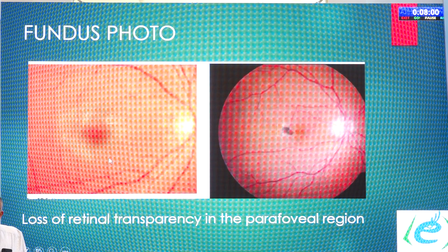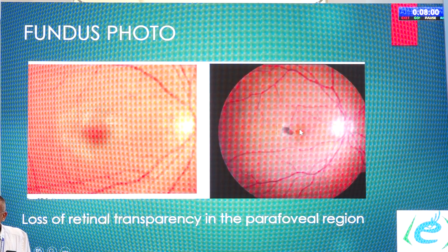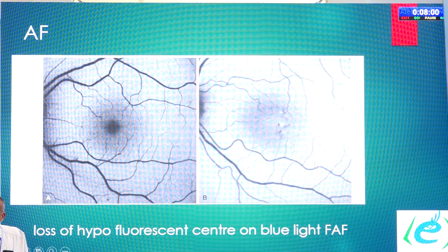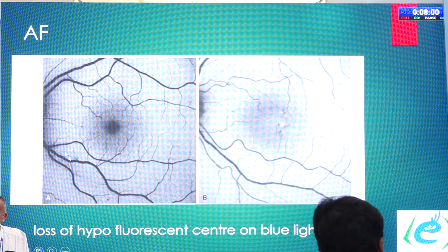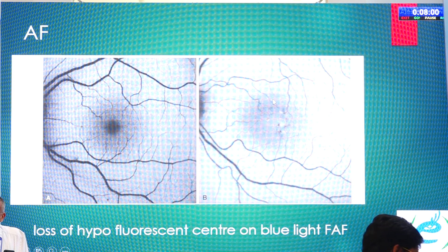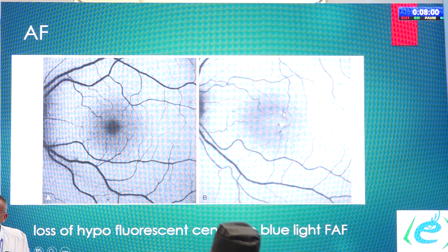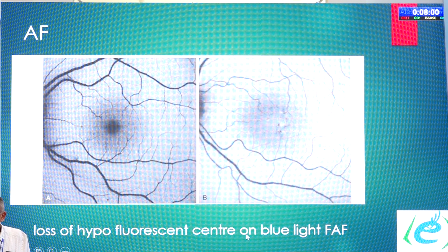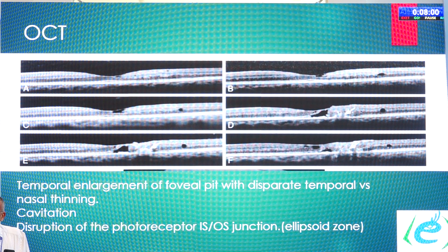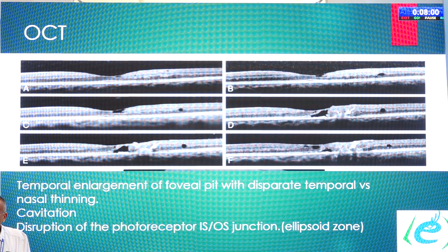The fundus photo shows loss of retinal transparency in the parafoveal region, and another photograph shows clumps of pigment. On autofluorescence, the normal foveal hypofluorescence is lost, and we have hypofluorescent areas — this is the loss of the hypofluorescent center on blue-light autofluorescence. On OCT, there is temporal enlargement of the foveal pit with disparate temporal versus nasal thinning — the temporal side is thinner than nasal — and cavities develop which increase over time.